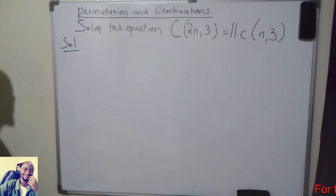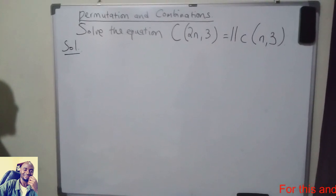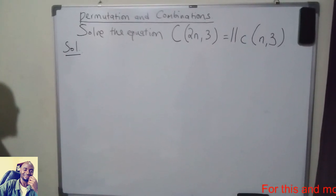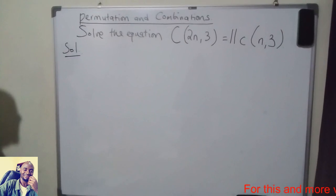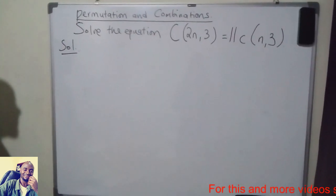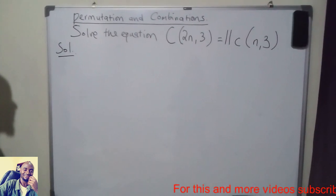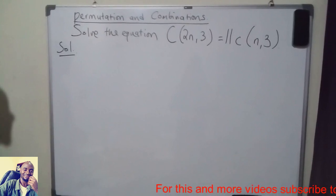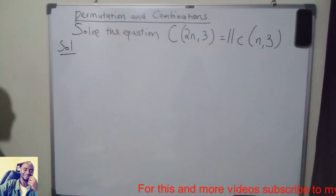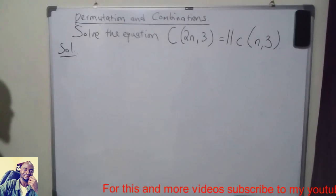I want to solve the equation: combination of 2n taking 3 at a time is equal to 11 times combination of n taking 3 at a time.